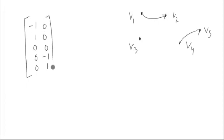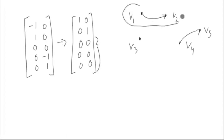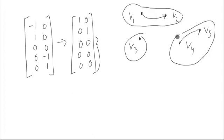If you find the Smith normal form of this, you end up getting something like this. Notice how many rows of zeros you have — there are three. That corresponds to the three connected pieces of the graph: this one, this one, and this one. These are the three connected components of the graph, and we can easily see that by examining the incidence matrix.